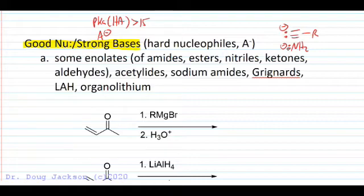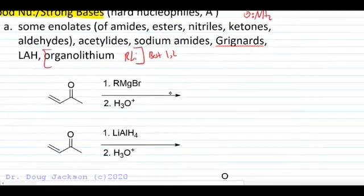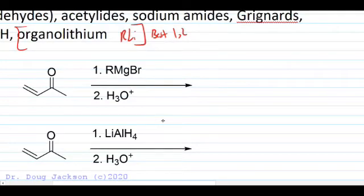Grignard reagents, we'll look at lithium-aluminum hydrides and organolithium reagents. Among the organometallics, the organolithiums are best when we want to zero in on that 1,2 addition product. Lithium-aluminum hydride much better than sodium hydride for picking that 1,2 reduction.